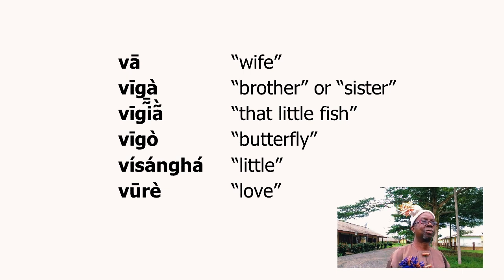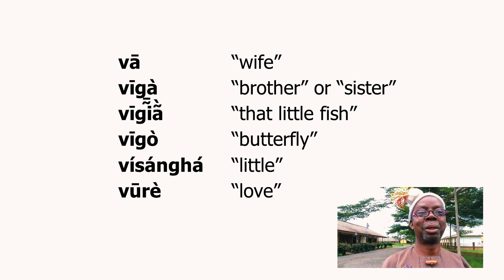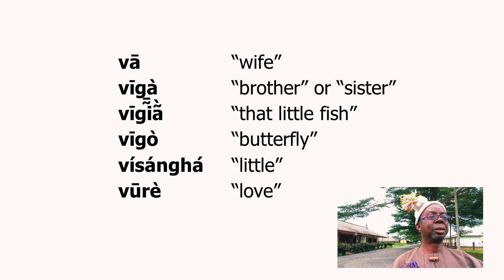People look at Vyap as a letter found in Kana because they have such words in Gokana as Va for wife, Vyga for brother or sister, Vygo for butterfly, Visanga for little, and Vuri for love. But just because V appears in several words in Gokana does not mean it is also like that in Kana — it is not. Vyap is pronounced Fyap in Kana, and any native speaker of Kana will tell you that that is truth.